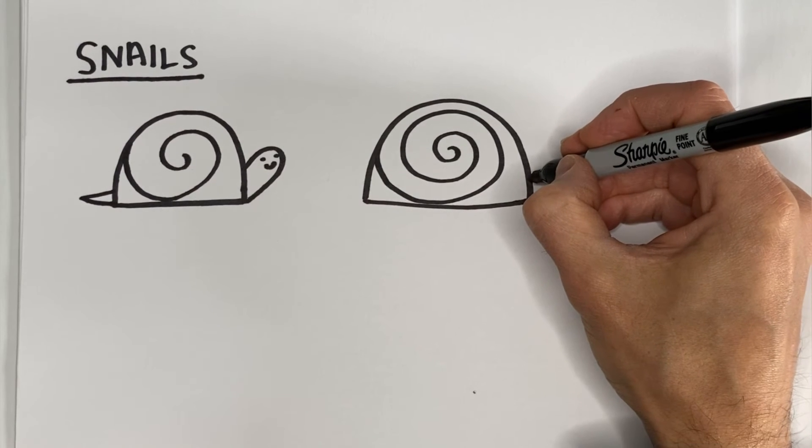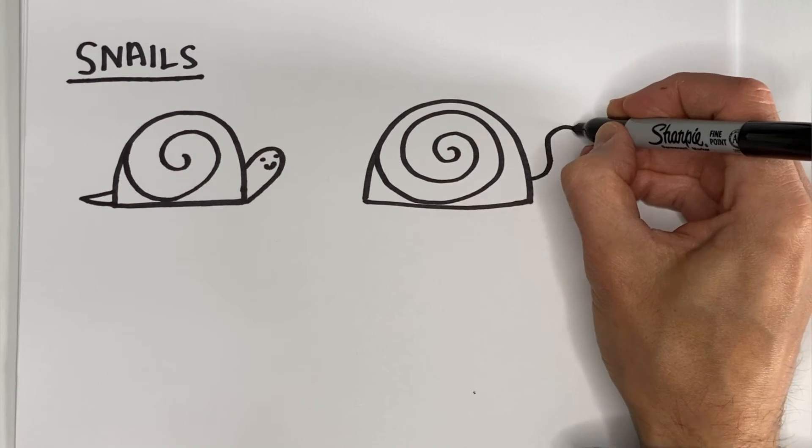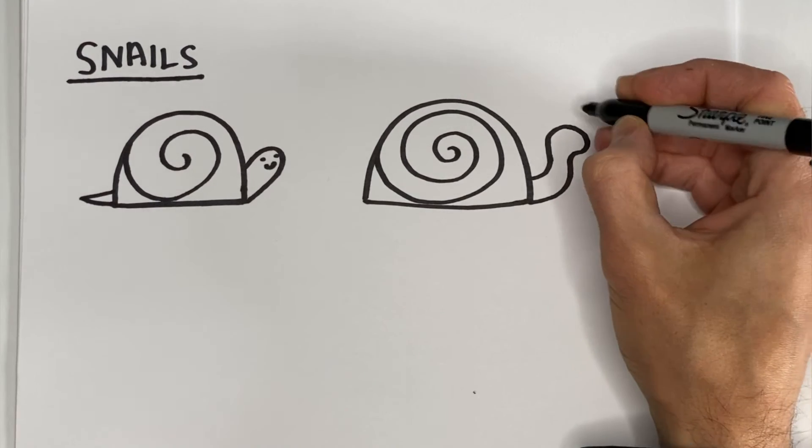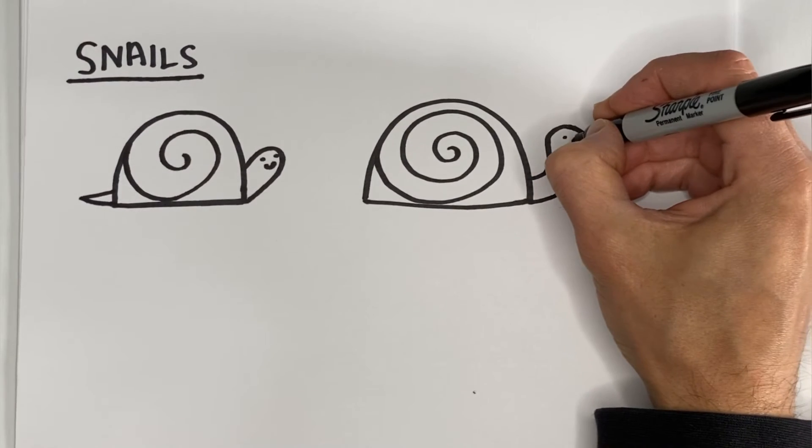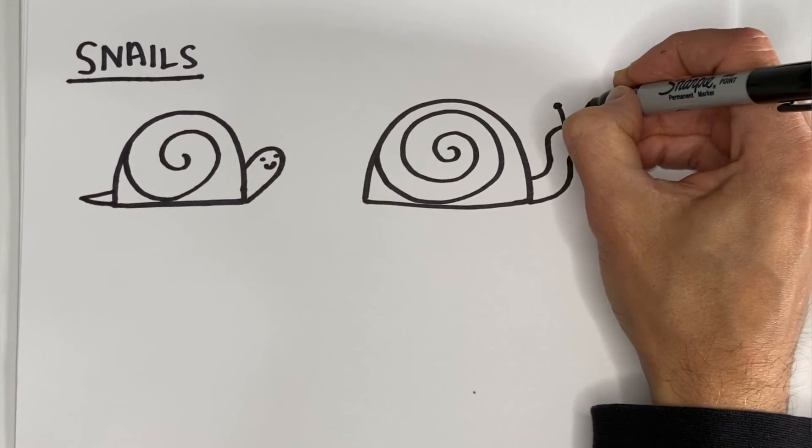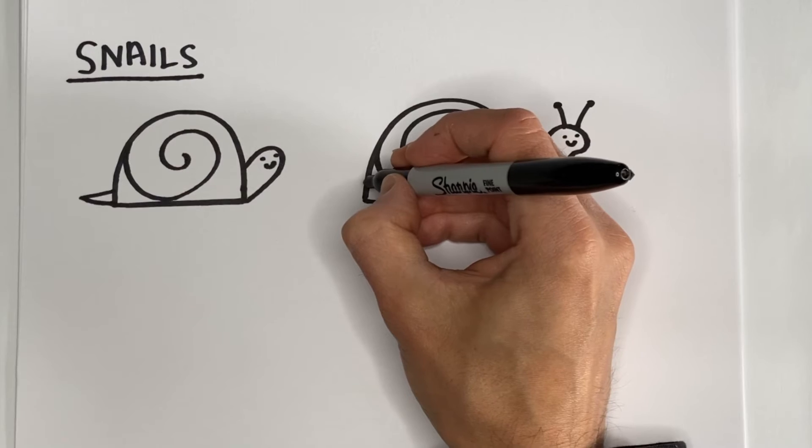And here, I'm going to make more of an S-shaped head. So two S's. And I'm going to make these sort of antennae that slugs sometimes are shown having.